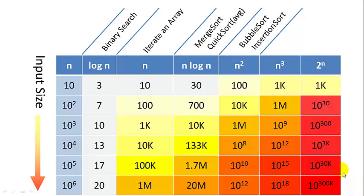So here we can see some popular algorithms. Binary search runs in log n, which makes it very, very fast. If you want to iterate an array, you have to look at each item in the array one at a time. So that is big O of n.